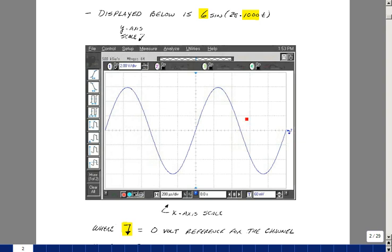And so we have one division, two divisions, three divisions above ground. And the number of volts per division is shown right here as two volts per division, so that gives us six volts.